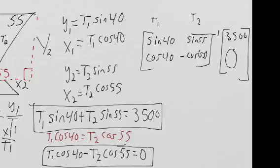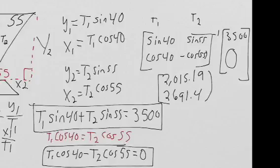So when I plugged it in, I got the final matrix of 2015.1. I'm just going to round it up to 19. And then 2,691. I'm going to round that to 0.4.